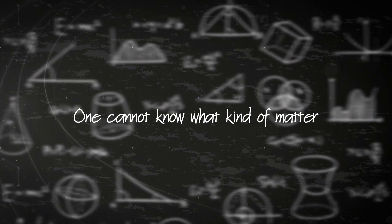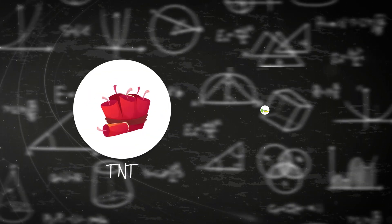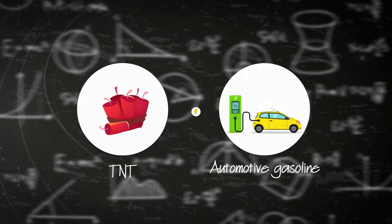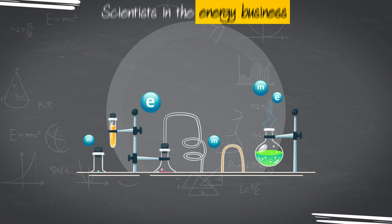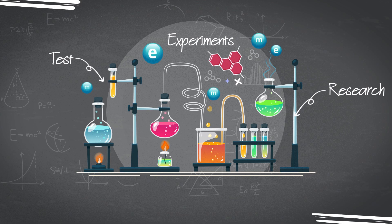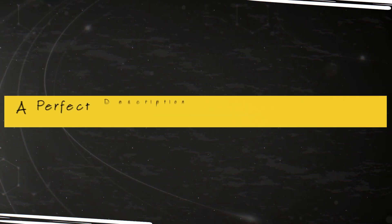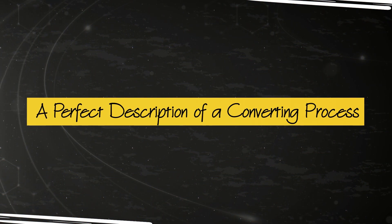One cannot know what kind of matter - TNT, automotive gasoline, etc. - produces how much energy. Scientists in the energy business must use their tests, experiments and research results to modify the formula. Without such augmentations, the formula is incomplete and unusable.